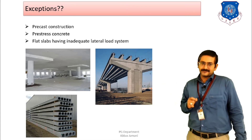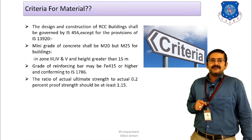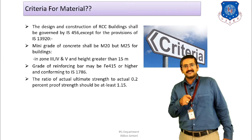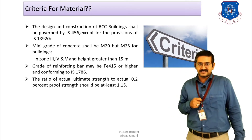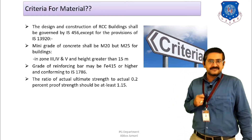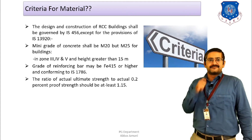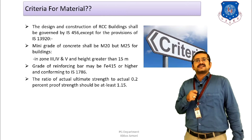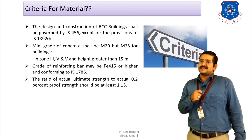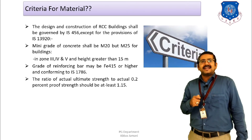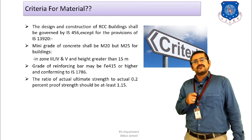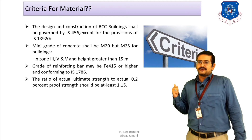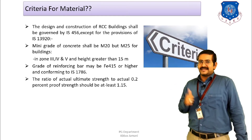Next, we consider the criteria for materials. The design and construction of buildings shall follow the guidelines of IS 456. The guidelines of IS 456 are to be overruled only in specific cases — when the building is located in seismic zones 3, 4, or 5, and when the height of the building is greater than 15 meters, the guidelines of IS 13920 shall govern.